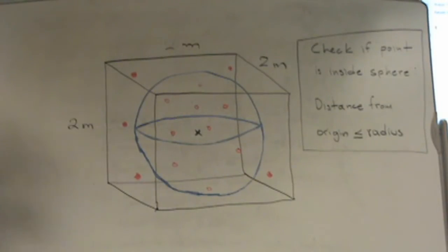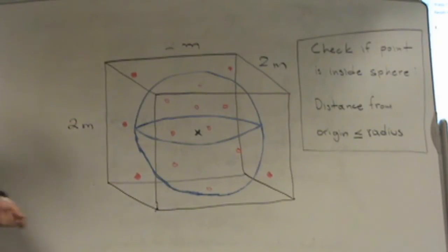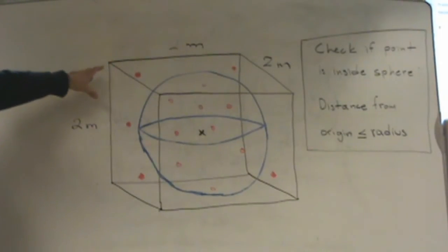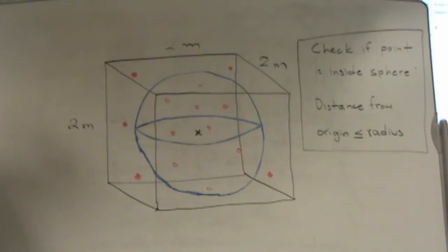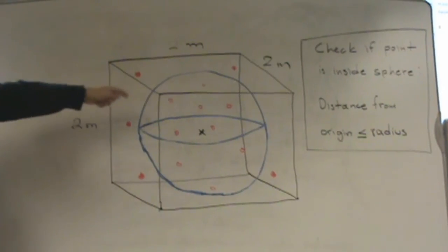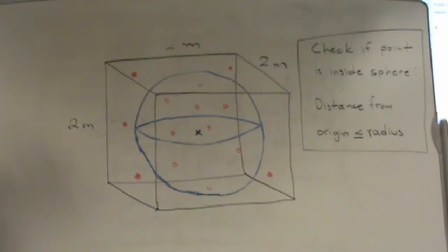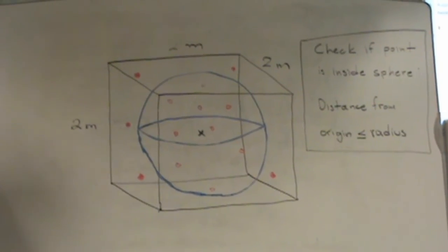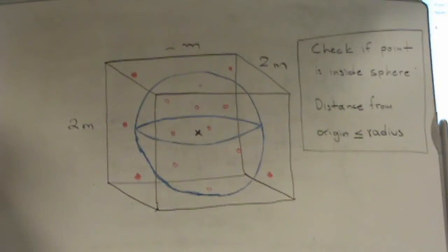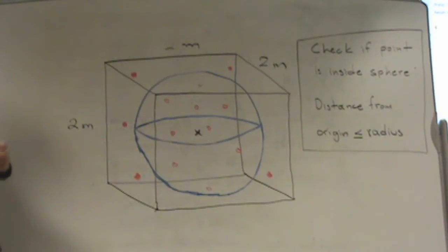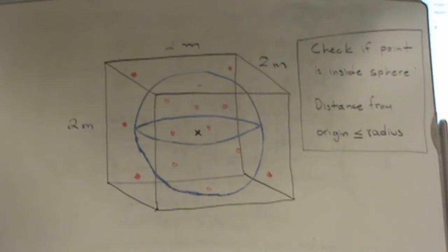We generate random points that have equal chance to be anywhere in this box — the two-by-two-by-two box — and then determine the number of points that are inside the sphere. An estimator of the volume of the sphere is the number of points in the sphere divided by the total number of points N, scaled by the volume of the cube, which is two cubed, equal to eight cubic meters.